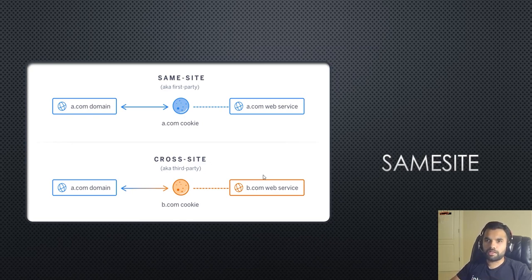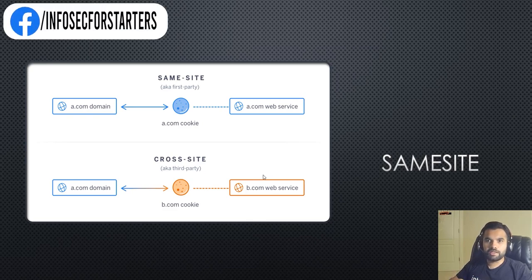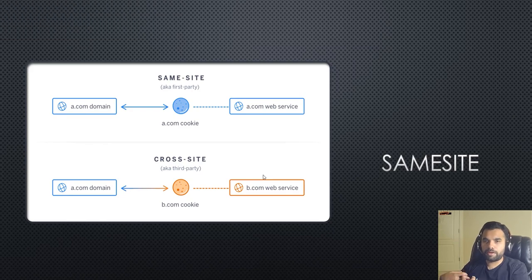A simple example: when you want to log into a blog or website and it says 'Login with Google,' when you click that, the request goes to the Gmail or Google domain. If Google does not attach the cookie in that cross-site context, you won't be able to fetch the Google cookie and you'll have to re-authenticate to Google. That's what cross-site communication is.